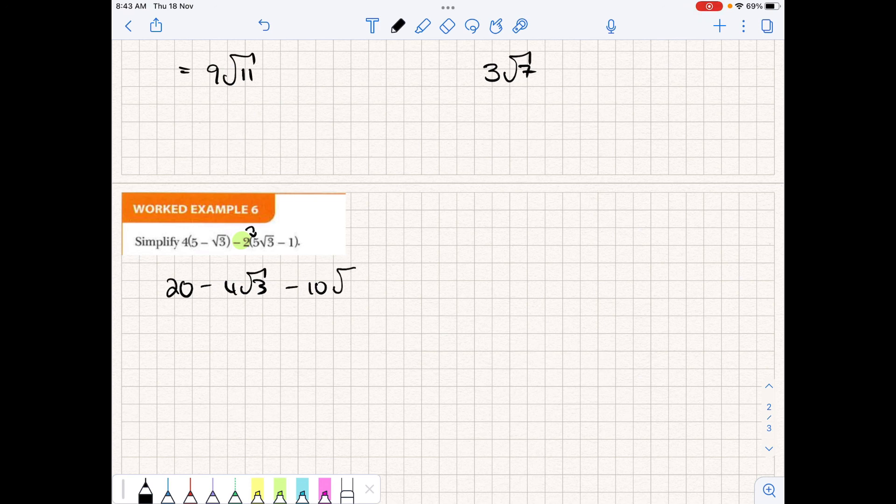So we'll get square root 3, and then plus 2, because two negatives make it positive. And from here we can collect like terms and simplify. So we will collect these two together, we'll get 22. And we will collect the two surds because they have the same number - they have to have the same underneath. And we can get minus 14 square root 3.